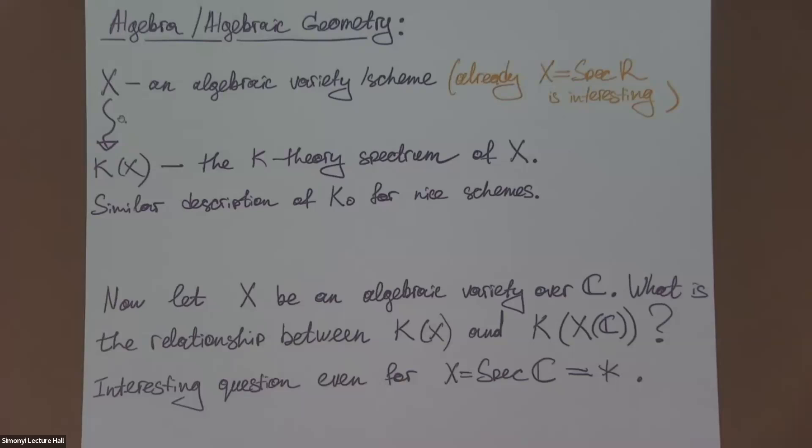People know how to produce the K-theory spectrum of X. If you take X an algebraic variety, you produce a certain topological object, and then you can compute its homotopy groups. And for nice schemes, you have a similar description of K_0. The reason why I say similar and not the same, is that you need to put some condition that you split short exact sequences of vector bundles.